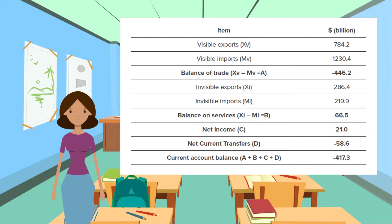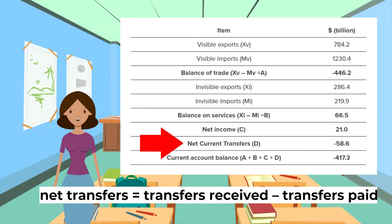Credits or inflows include financial aid, donations, grants, and pension payments received from overseas residents and foreign governments, and tax and excise duties paid by overseas residents on UK purchases. So again we have the equation: net transfers equals transfers received minus transfers paid.